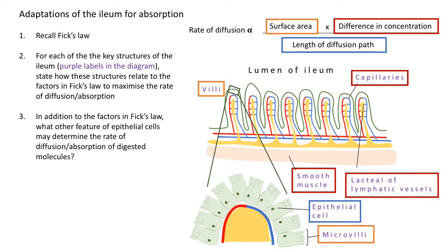Those are the key features: you want a large surface area, a large difference in concentration to maintain that gradient, and a short diffusion distance. All those factors come together to maximize the rate of diffusion — or absorption, since not all substances are diffusing; glucose, for example, is co-transported.